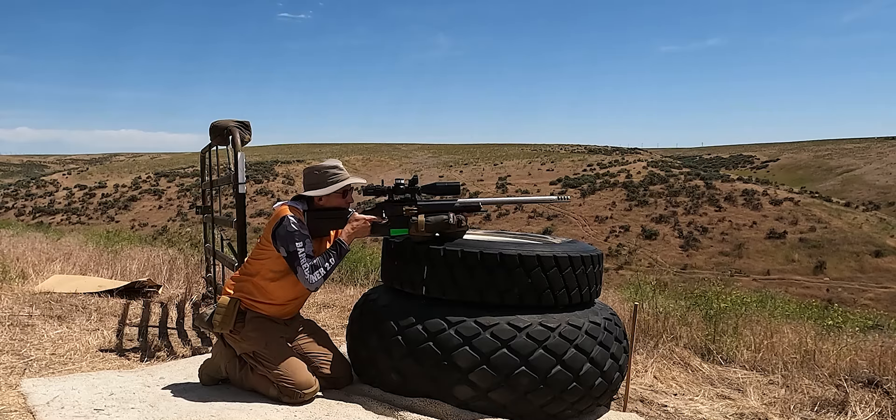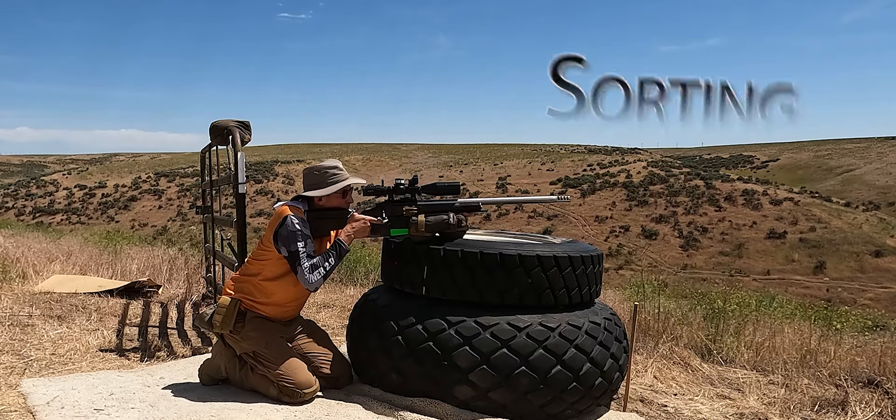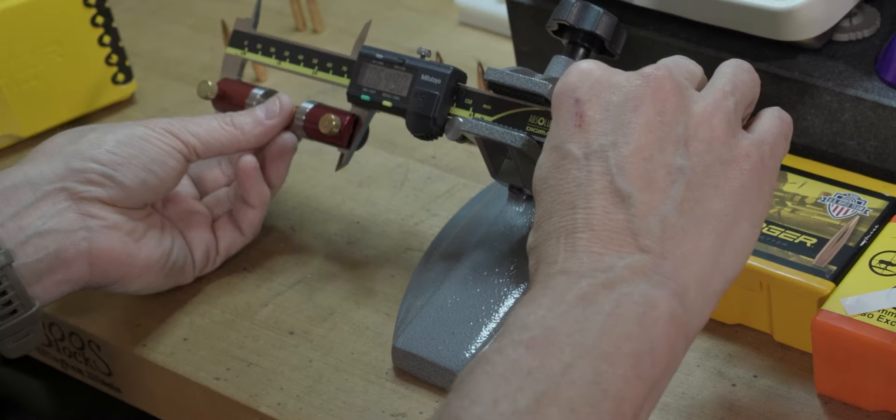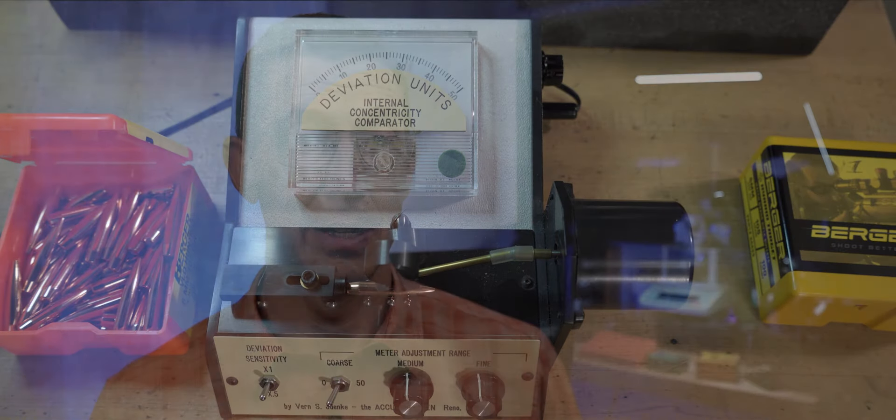So the fourth thing on the list is speculative sorting of components. What do I mean? I mean sorting bullets by base to ogive, sorting them by overall length, sorting them on a bullet genie or a Juenke machine, sorting your primers by weight or height or anything else, because that speculative sorting may or may not provide a benefit. It's not going to hurt you, but on the other hand, the time you spend doing it might better be used elsewhere in order to improve your scores.